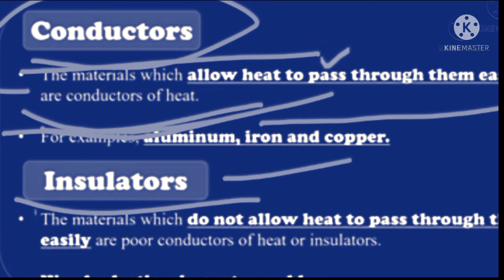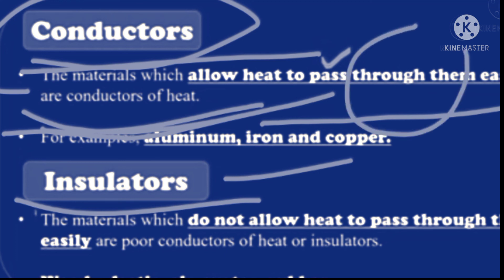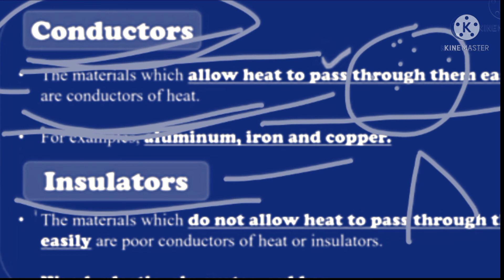Examples of conductors: aluminum, iron, copper, and mercury. These are all metals and are called conductors. Hamare gharon mein jo utensils hotey hain jo food pakaatey hain woh different metals se bane hotey hain — ye conductors hain kyunki inse heat transfer hokar food cook hota hai. Mercury bhi ek conductor hai, jo thermometer mein use hota hai.